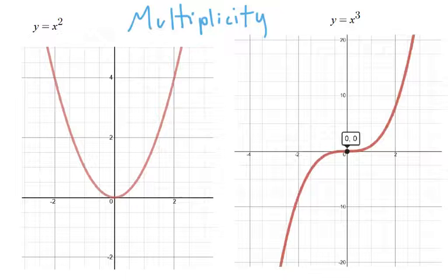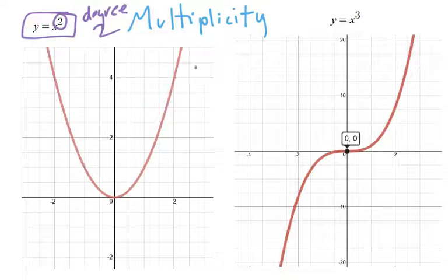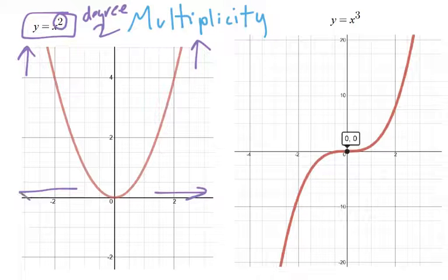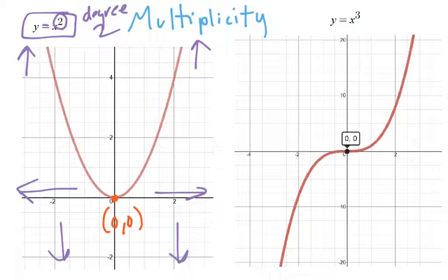With the fundamental theorem of algebra, if we look at this quadratic x squared, that degree of two tells us a few things. It tells us the end behavior — it's a positive function, two is even, so we know it goes up to positive infinity whether we go to positive or negative infinity. If it were negative x squared, it would go down. It also tells us there are two zeros. However, if we graph it, we end up having one zero at (0, 0). Why is that?